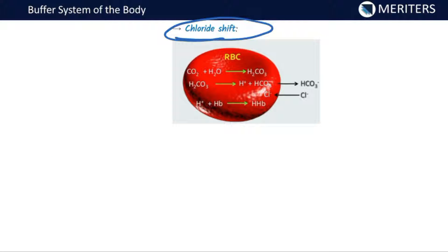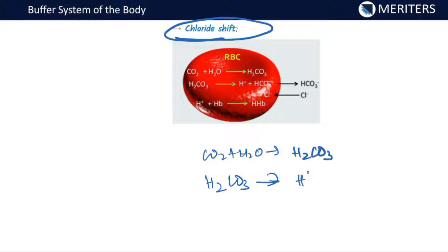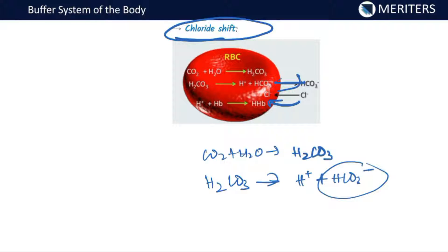There is something called the chloride shift, which is very important. CO2 combines with water to form carbonic acid, which releases H+ and forms bicarbonate ions. In acidosis, the bicarbonate ion is pushed outside the cell, and to create a balance, the chloride ion is shifted inside. This is called the chloride shift — a very important phenomenon happening inside your RBCs.